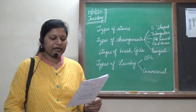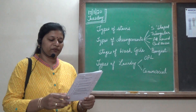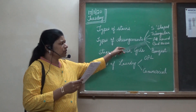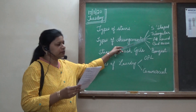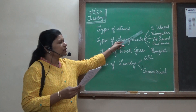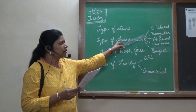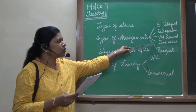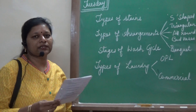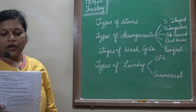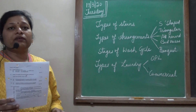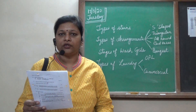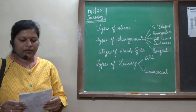Coming to the fifth question: draw a neat sketch of any five types of flower arrangement with various equipment used. We have different shapes — I have listed five types, though there are many more. S-shaped, also called hogarth; triangular arrangement; all-round arrangement, which are placed in lobbies; bud vases for restaurant tables; and banquet arrangements. Also list the various equipment used in flower arrangements. That gives you 10 marks.